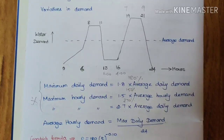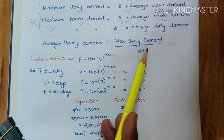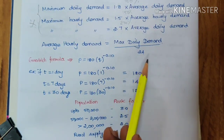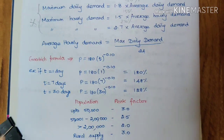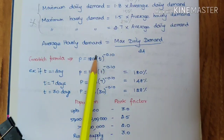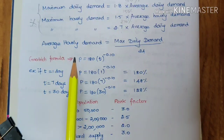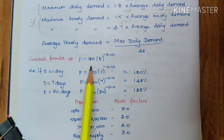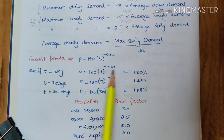The average hourly demand equals the maximum daily demand divided by 24 hours, which gives you the average hourly demand value. The Goodrich formula is also given: P = 180 × t^(−0.1), where P is the peak factor — representing the ratio of maximum water usage at a given time to the average demand — and t is the number of days. For example, if t = 1 day, P = 180%.